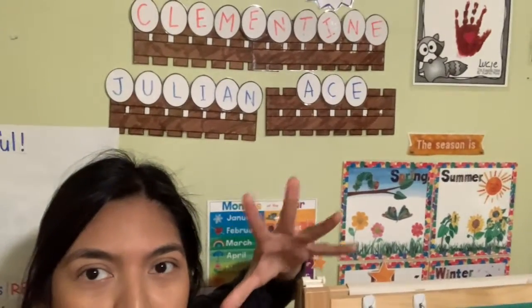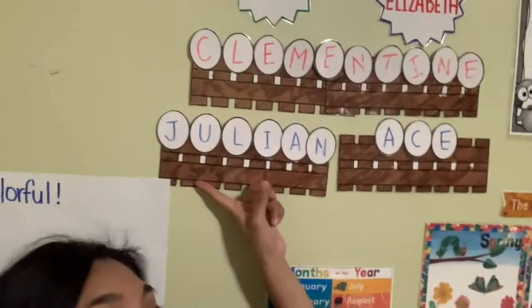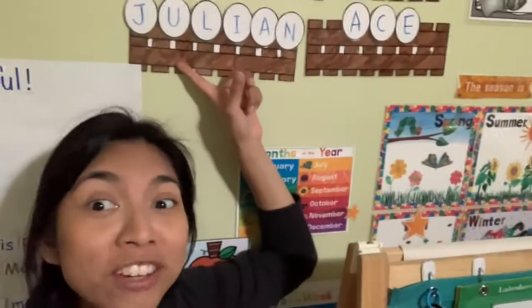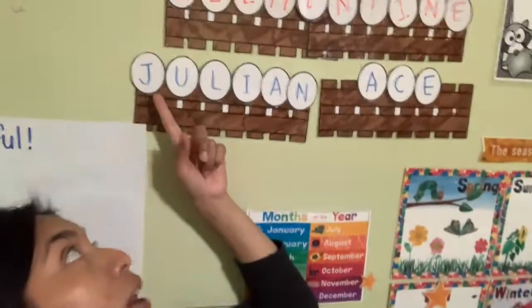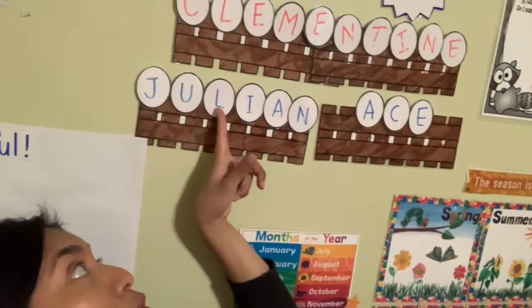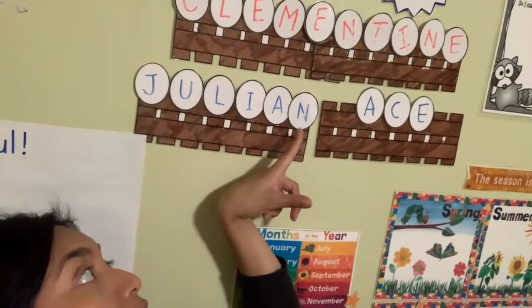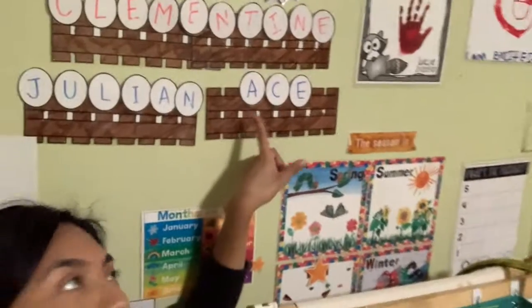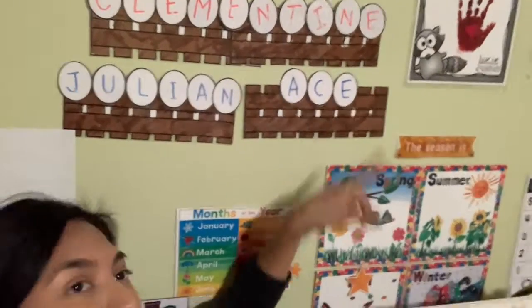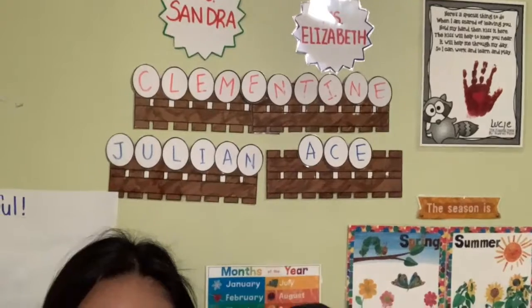Oh my goodness! Okay, let's continue. We're going to say good morning and let's count how many letters you have. You have one, two, three, four, five, six letters. And then we're going to say good morning to Ace — one, two, three letters.